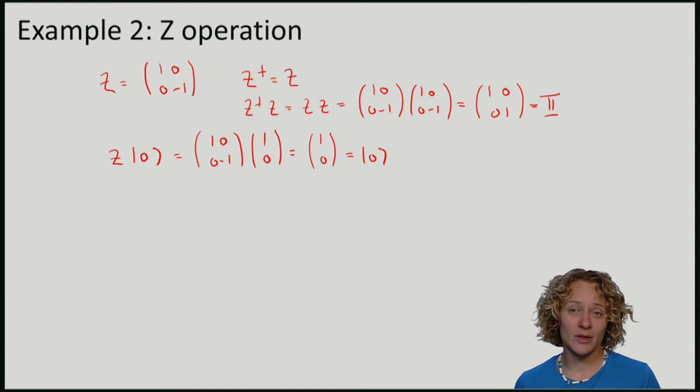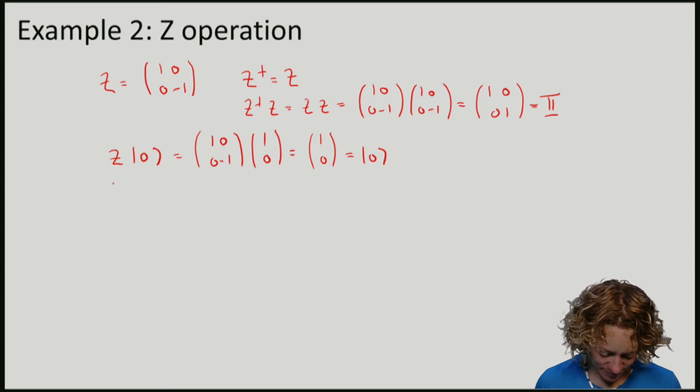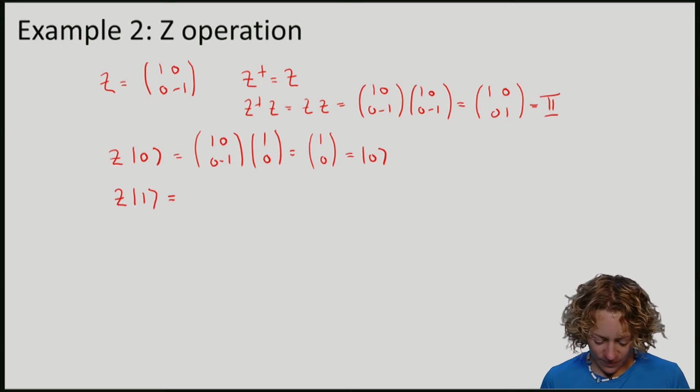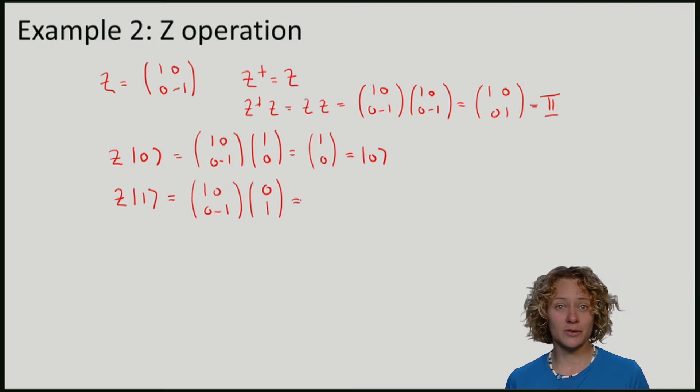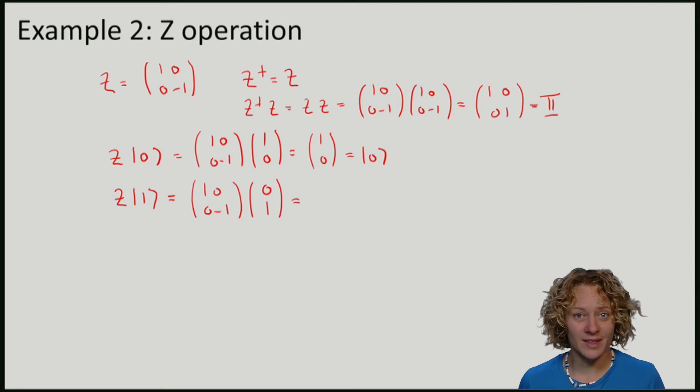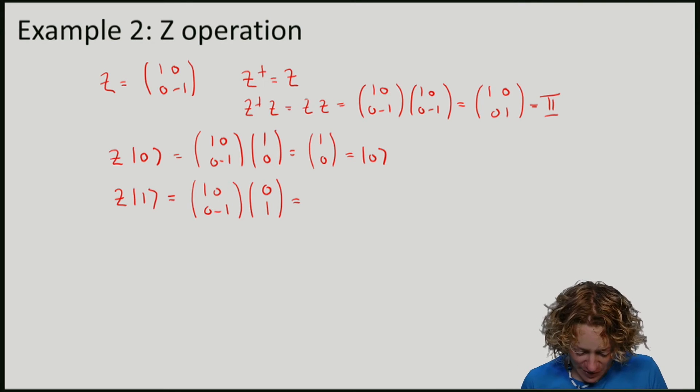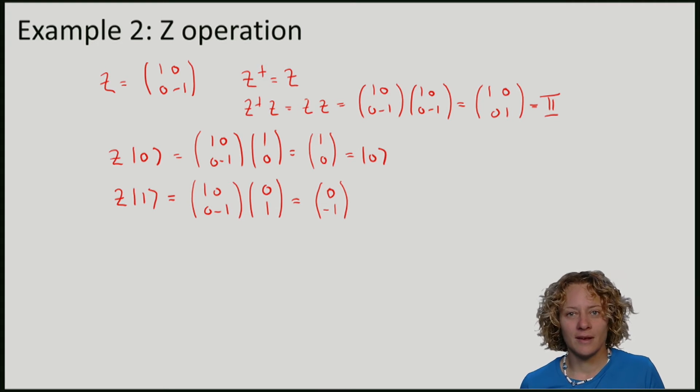Let's have a look what Z does to 1. Let me write that out. So the first element stays 0 and the second element remains 1 except for this minus sign.